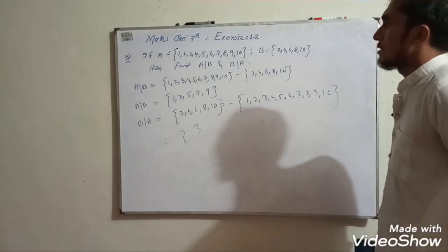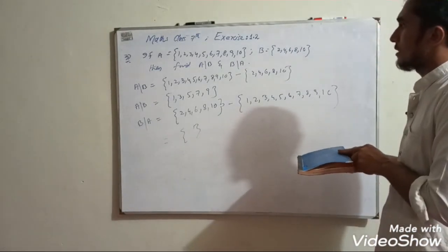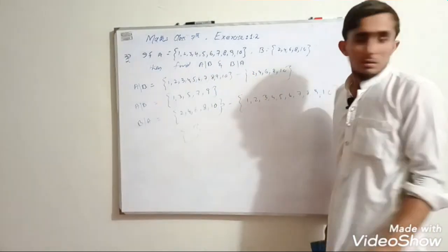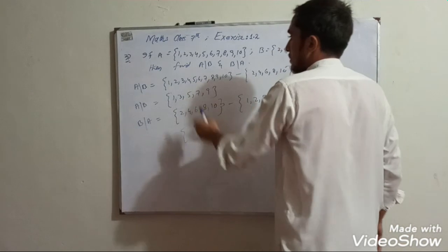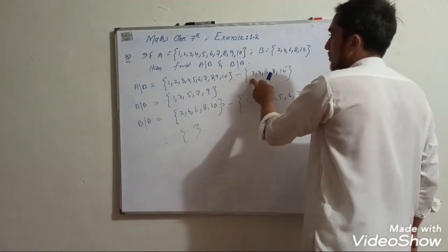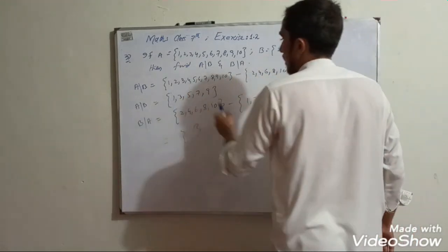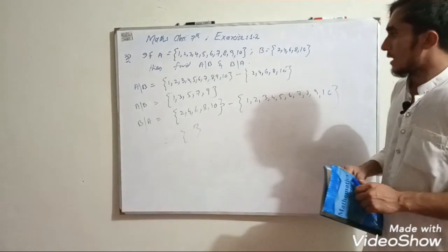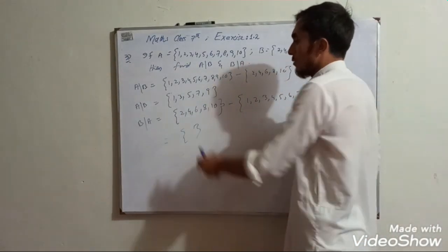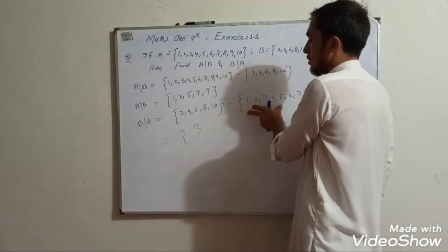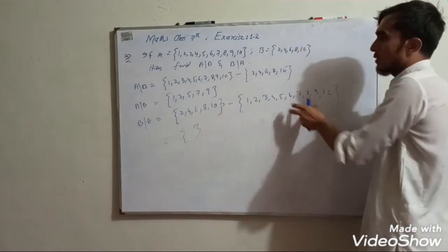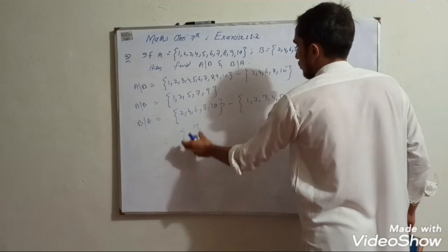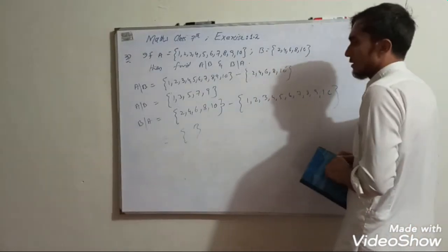Question number 3: if A = {1, 2, 3, 4, 5, 6, 7, 8, 9, 10} and B = {2, 4, 6, 8, 10}, find A minus B and B minus A. A minus B = {1, 3, 5, 7, 9}. B minus A: since all elements of B are in A, B minus A is empty.